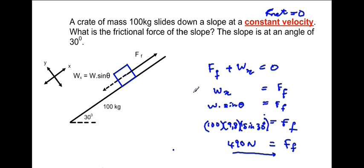The highlight of this video is to emphasize that when an object moves at constant velocity, the net force acting on it is zero. With friction and the x-component of weight as the only two forces, the frictional force equals the x-component of weight. So w sine theta equals the force of friction, giving 490 newtons. Thank you very much.